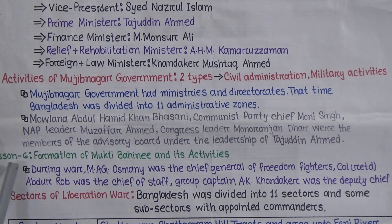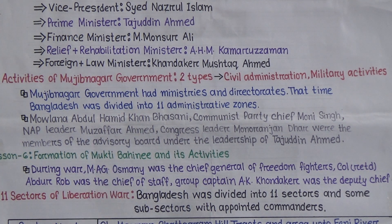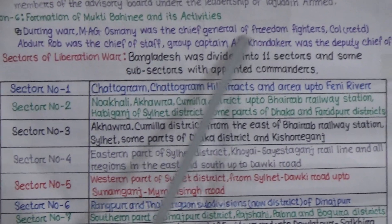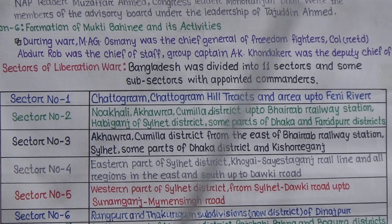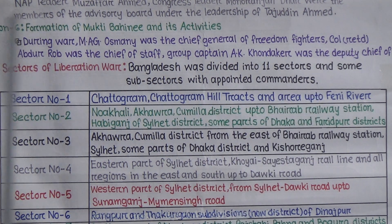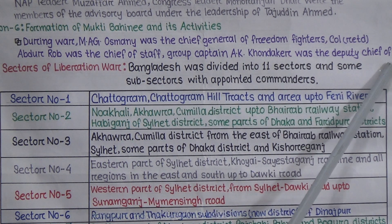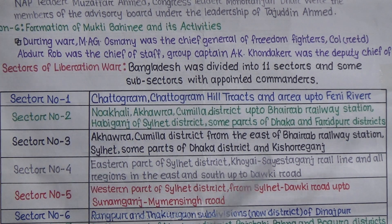Now we are going to learn about Lesson 6: the formation of Mukti Bahini and its activities. During the liberation war, M.A.G. Osmani was the chief general of freedom fighters. Retired Colonel Abdul Rabb was the chief of staff, and Group Captain A.K. Khandaker was the deputy chief of staff. These three are important pieces of information related to Mukti Bahini and the liberation war.